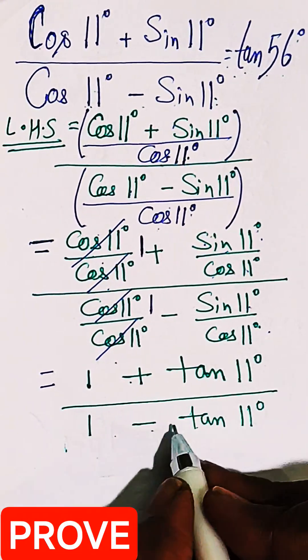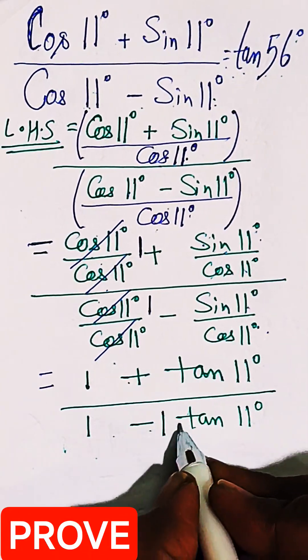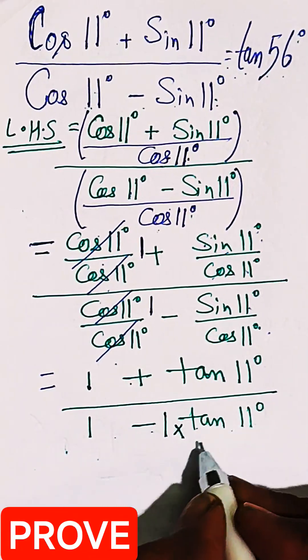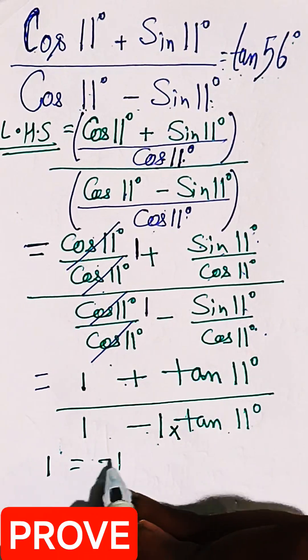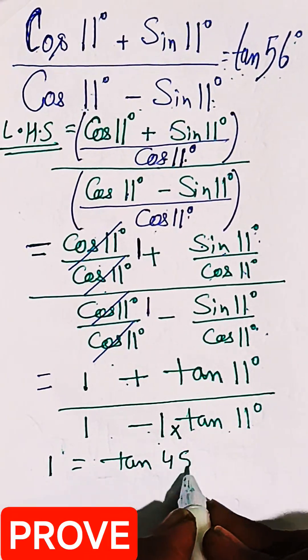How? Because tan 11 can be multiplied with 1 in the denominator, and this 1 is the value of tan of 45 degrees.